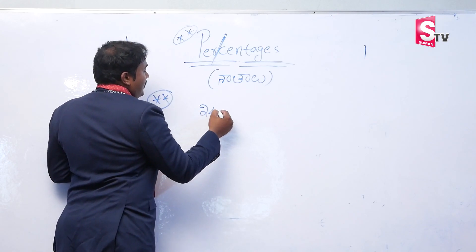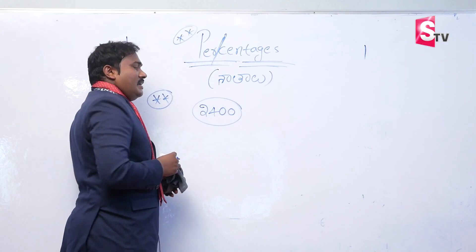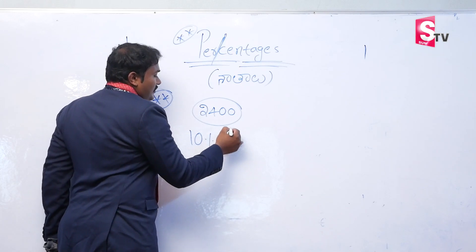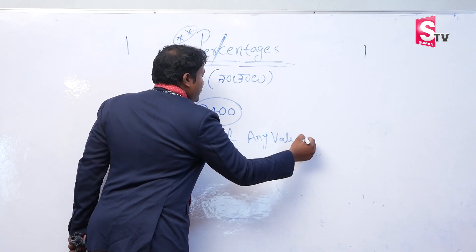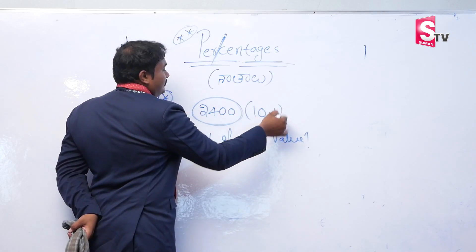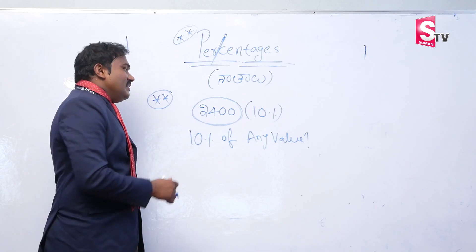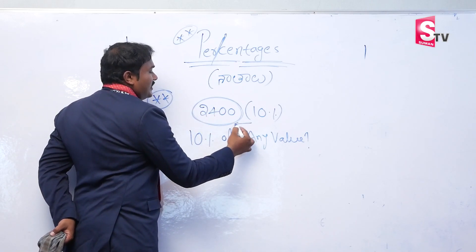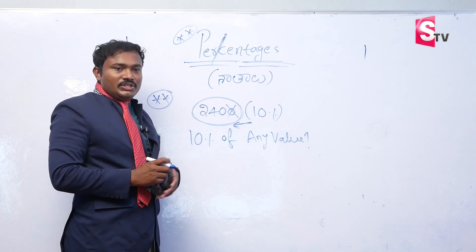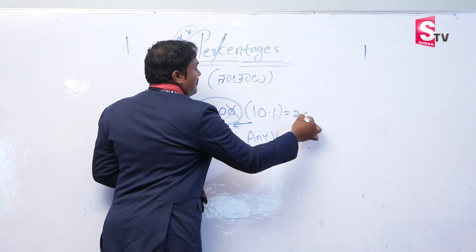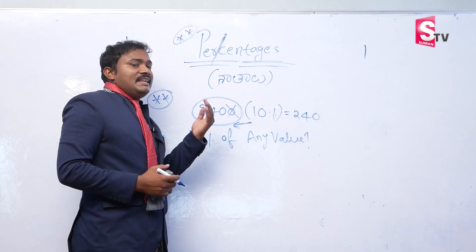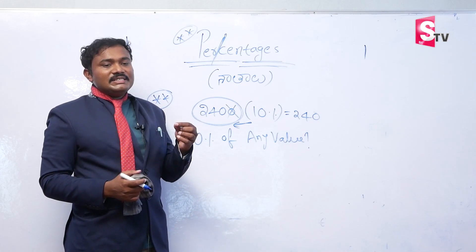Suppose 10% of 2400. How to take 10% of any value? From the right side, eliminate one zero. The remaining value is the 10% of that number. So 10% of 2400 is 240.